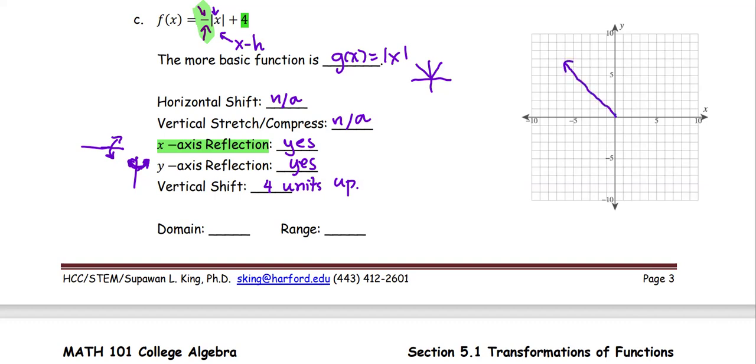So this is the basic function graph, g(x) = |x|. When it has the x-axis reflection, the graph will flip to the bottom.